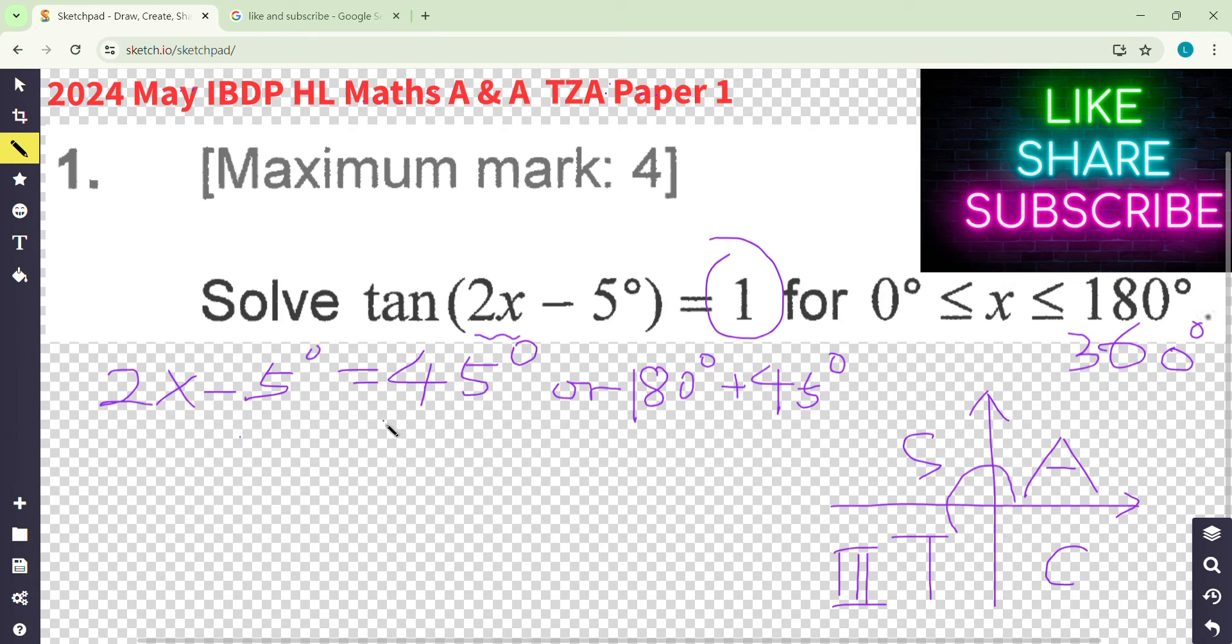So you have two solutions for 2x minus 5. Then you work on it. So 2x equals 50 degrees or 2x equals 230 degrees, then divide by 2.